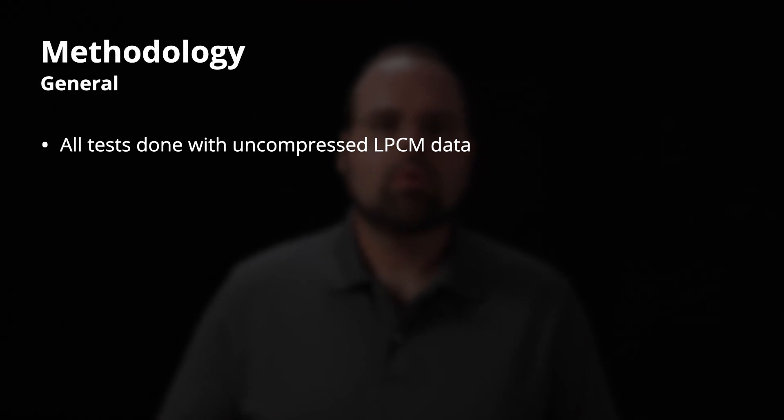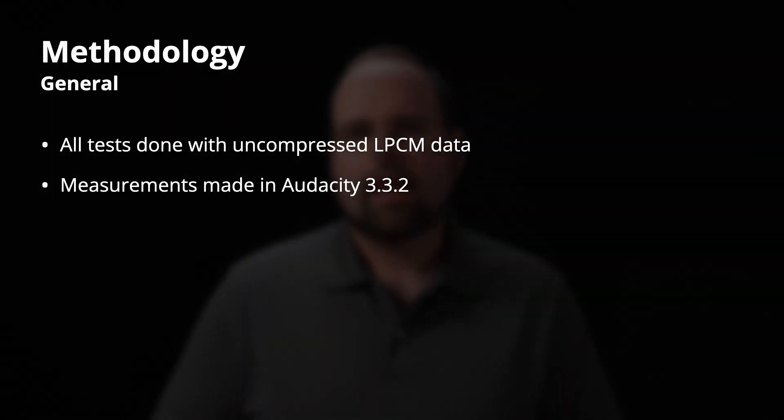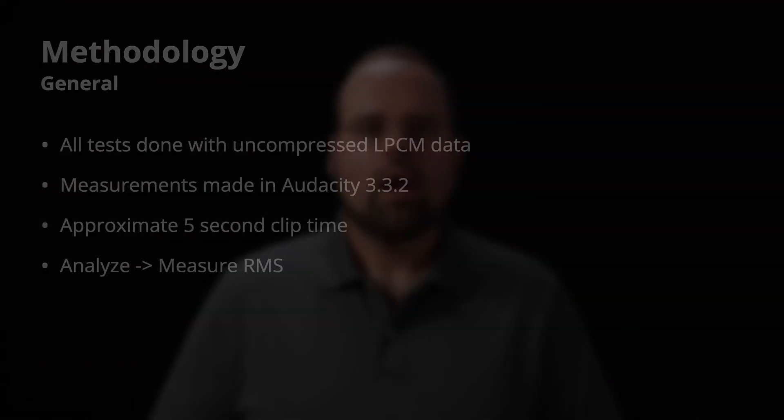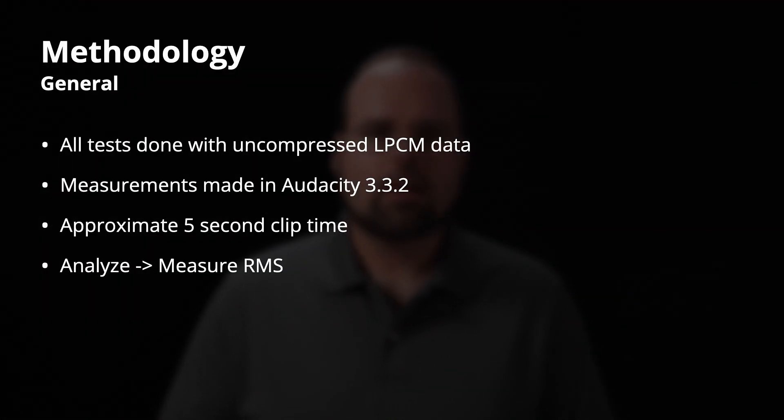We're going to be talking about some basic audio performance testing from the R5. Before I get into the details, let me give you a brief overview of the methodology. All of the tests were performed with the camera set up for uncompressed LPCM audio — 16-bit, 48 kilohertz on the R5 — which is the best quality audio that the camera can do. The measurements were made in Audacity, the open source audio editing software version 3.3.2, and consisted of loading an approximately five-second clip and running the analyze measure RMS setting on it.